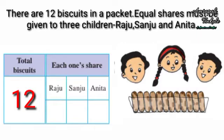Continue distributing the remaining biscuits one by one to each of the three children. Each one will get 4 biscuits. So they got 4 biscuits each. Next example.